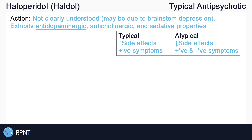The way that haloperidol works — the mechanism of action — is not clearly understood. The antipsychotic activity may be due to brainstem depression. Haloperidol does exhibit anti-dopaminergic, anti-cholinergic, and sedative properties. Symptoms of schizophrenia are thought to be caused by hyperactivity of dopamine receptor neurotransmission in the brain, but this theory does not provide a complete explanation for schizophrenia.